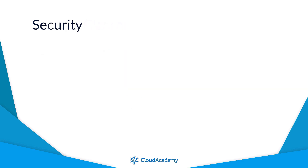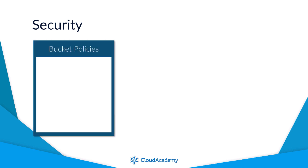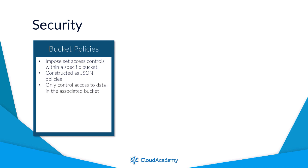Let me now talk about the different security features offered by S3, starting with bucket policies. Bucket policies allow you to impose and set access controls against who or what can access the data within a specific bucket. The policy itself is written in JSON, and these policies are very similar to identity and access management policies. However, they only control access to the data in the bucket that the policy is associated to.